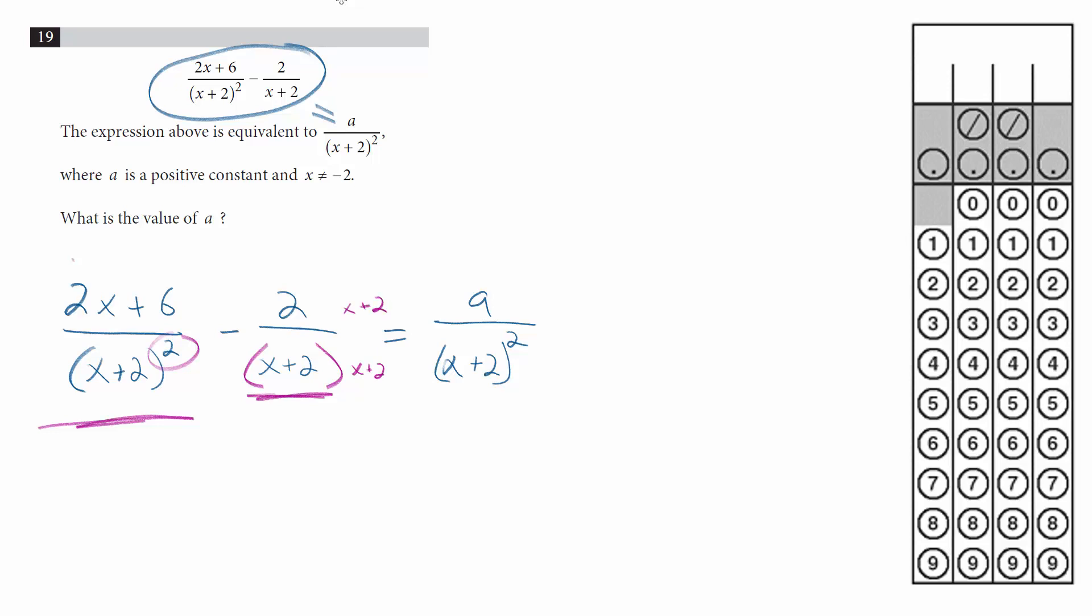So, for the numerator, we get 2 times x plus 2. On the first fraction, we're left with still 2x plus 6. And since we have combined them, that means that they all have the same denominator.